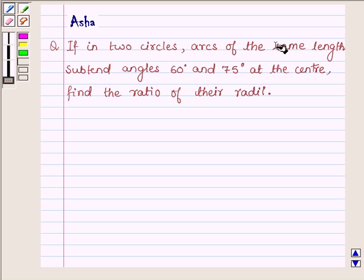If in two circles, arcs of the same length subtend angles 60 degrees and 75 degrees at the center, find the ratio of their radii.